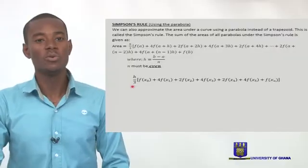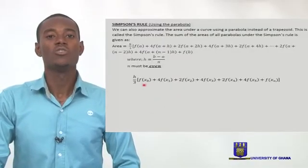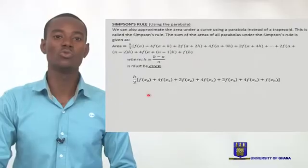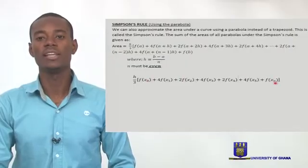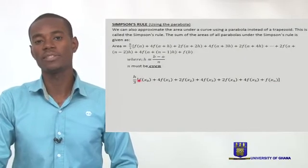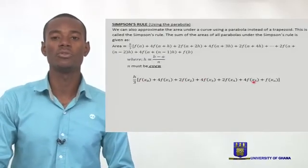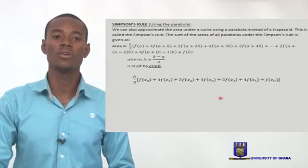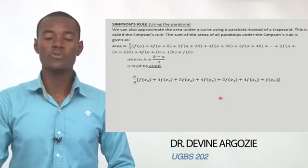Given a function, you find your h the same way: b minus a over n. Then you evaluate all the functions by taking the first value a, adding h repeatedly until you reach the other extreme of the interval. The first value x0 gets coefficient 1, then alternating 4 and 2, then 4, and the last value gets coefficient 1. Then substitute into the function and break it down just as we did for the trapezoid rule.